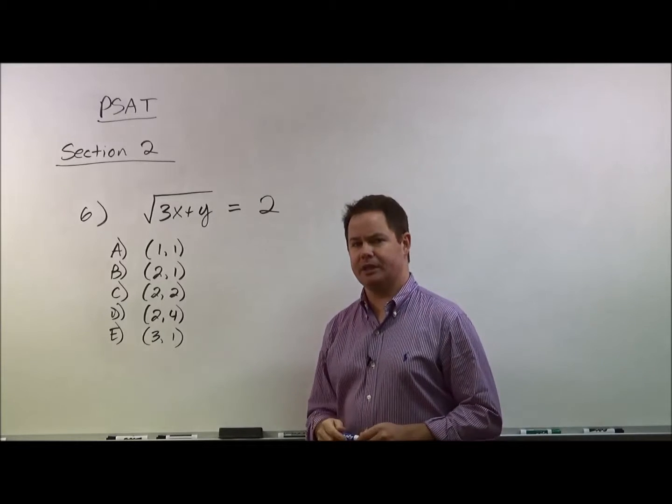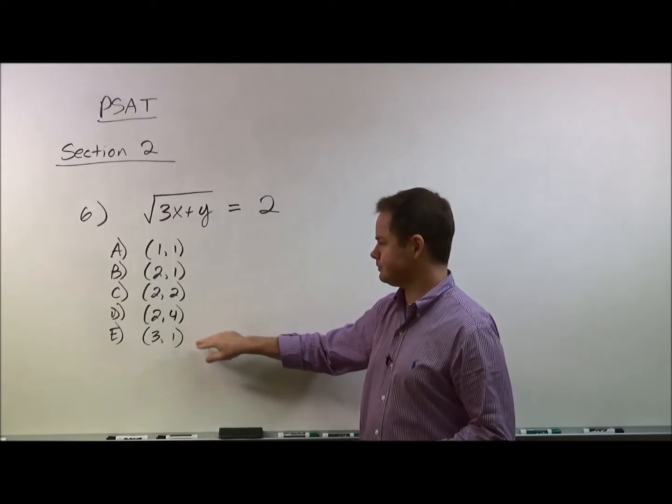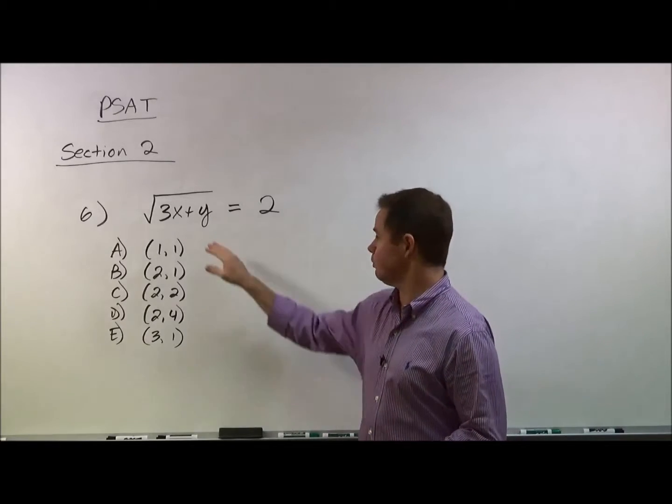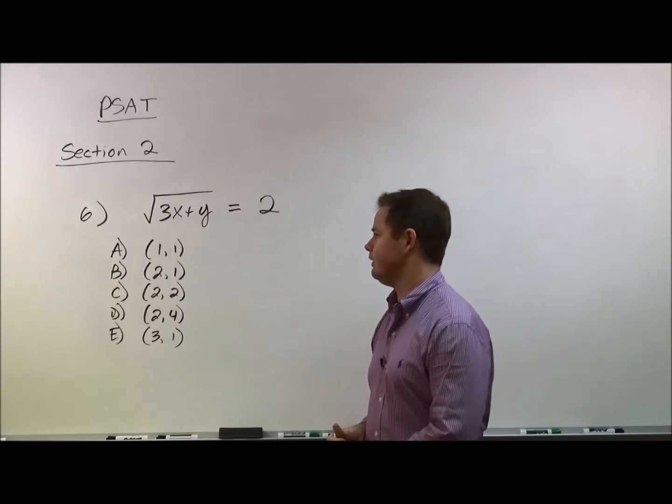So it says, which of the following ordered pairs is a solution to this equation? And basically what that means is when you plug each of these in, only one of them is going to work where this will actually work out to equal two when you test those values.